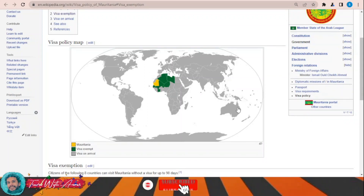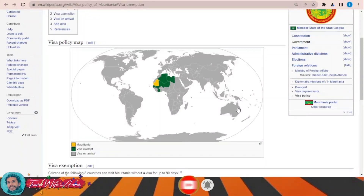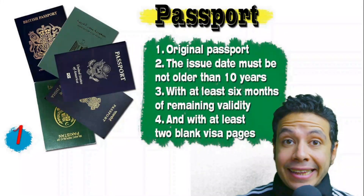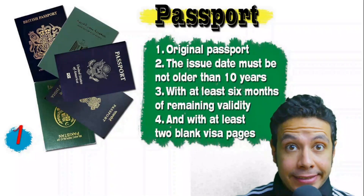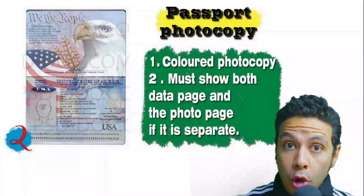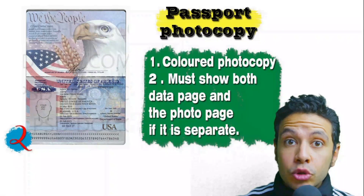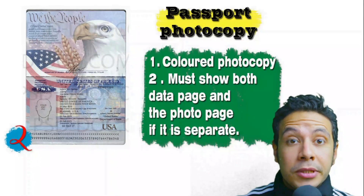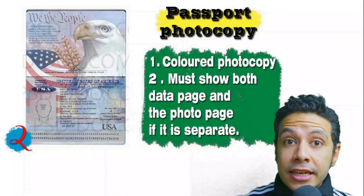I will also tell you in this video about all the required documents you will need in general while applying for any visa. Speaking about your passport: it must be original and must not be older than 10 years, with at least six months of remaining validity and at least two blank visa pages for stamps. In many cases you will also need a photocopy — it could be one copy or more, preferred in color, with both the data page and photo page showing. In some cases you might need to photocopy every single page.